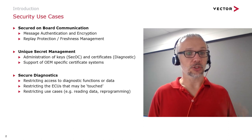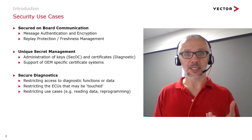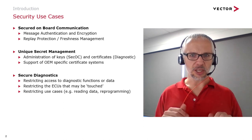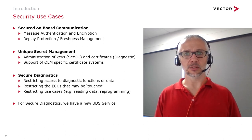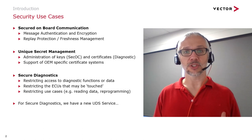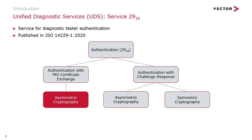We have secure diagnostics, which is the main focus in these videos — the ability to restrict access to functions and data, to limit the ECUs that can be touched by a diagnostic tester, and also to restrict use cases. This is all delivered with a new UDS service, 0x29, published in ISO 14229 part 1 in 2020, split into two main parts: one covering authentication with PKI certificate exchange, the focus of this series, which makes use of asymmetric cryptography, and then authentication with challenge and response, either asymmetric or symmetric.